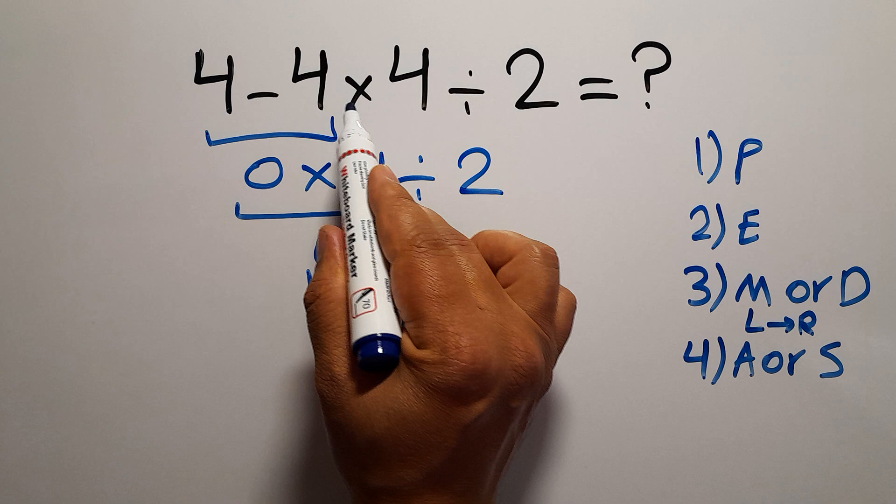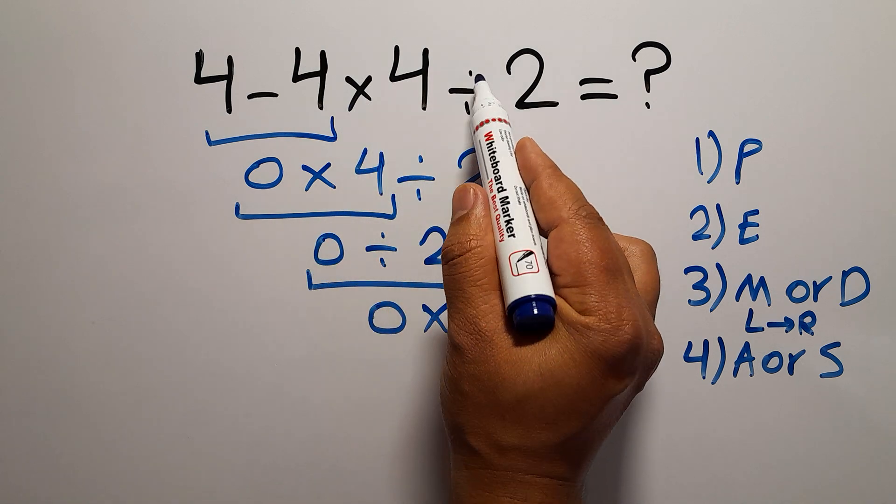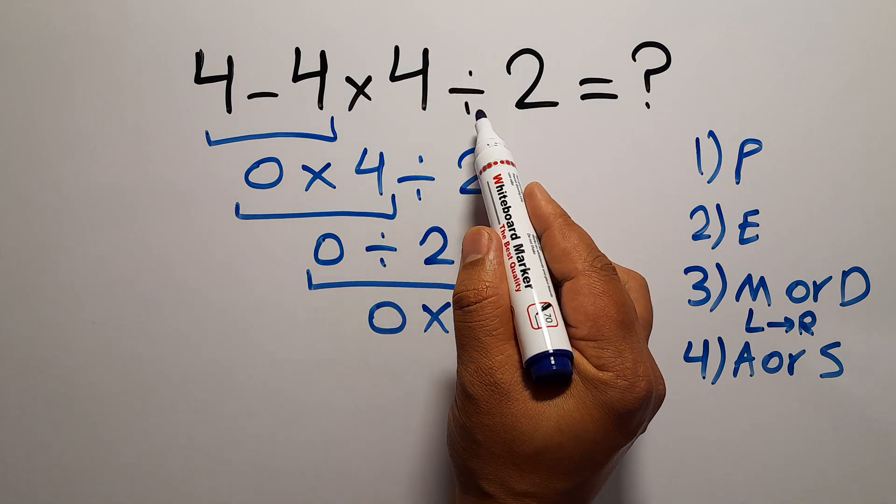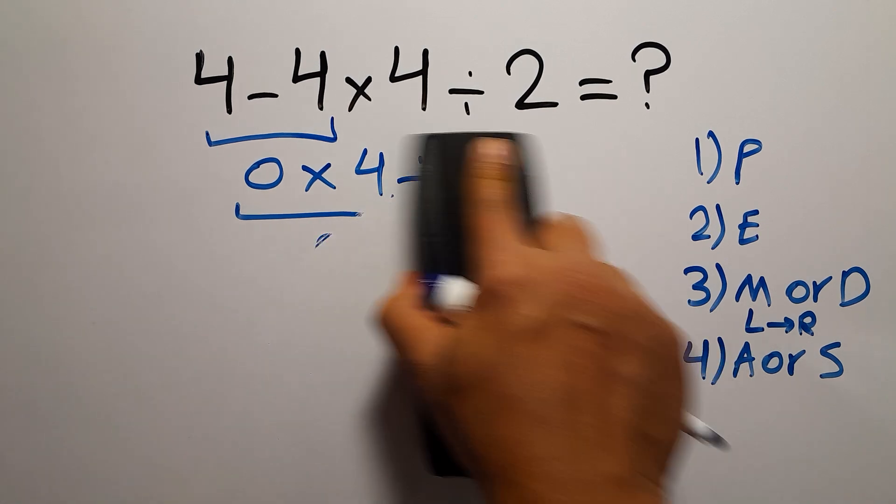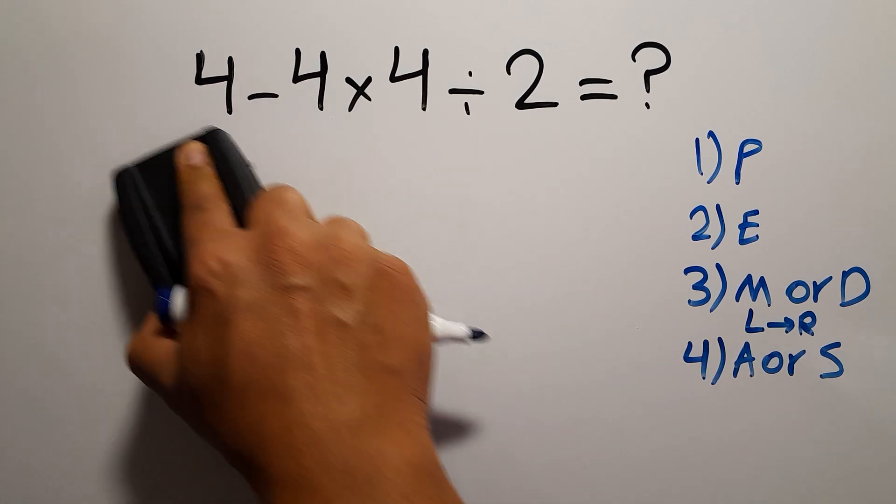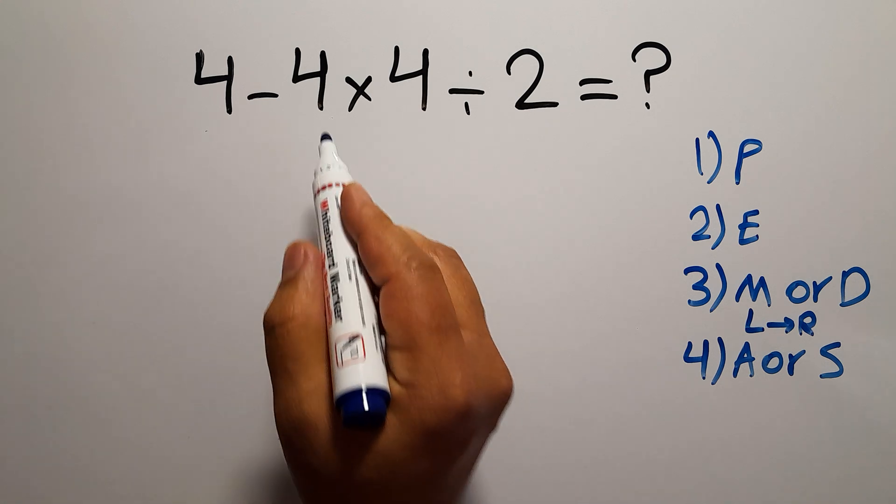Okay, let's do it. So first, 4 × 4 equals 16. Now we have 4 - 16 ÷ 2. Next we have to do this division.